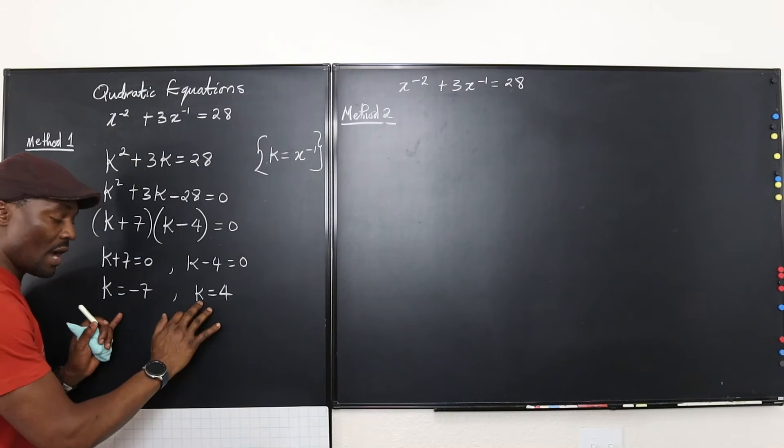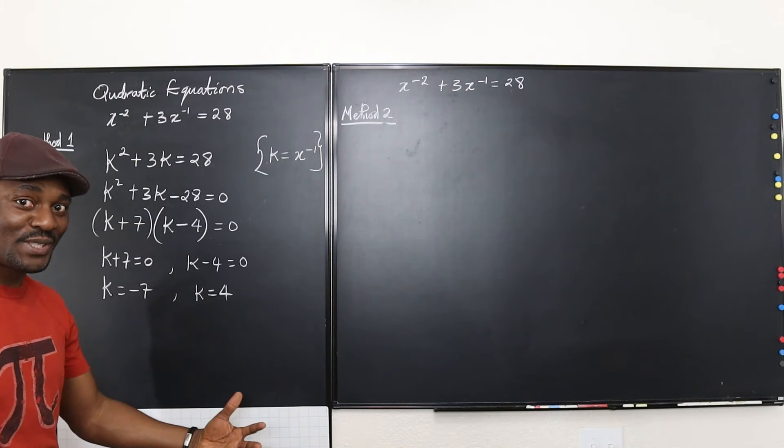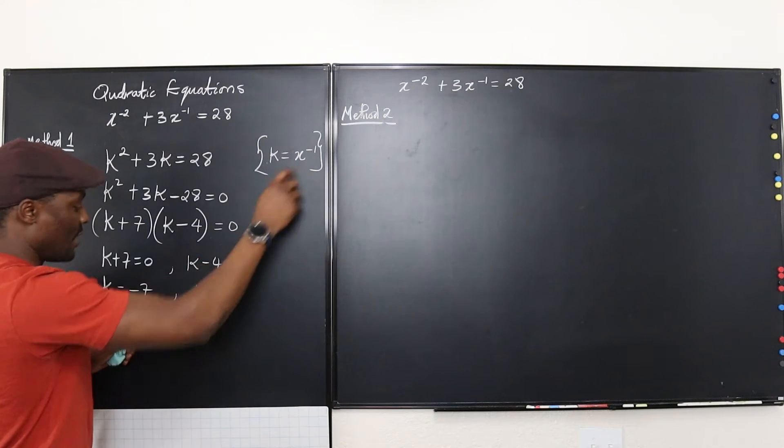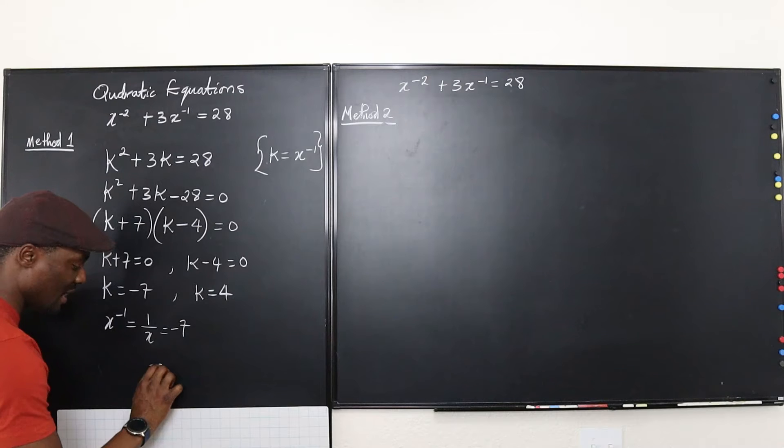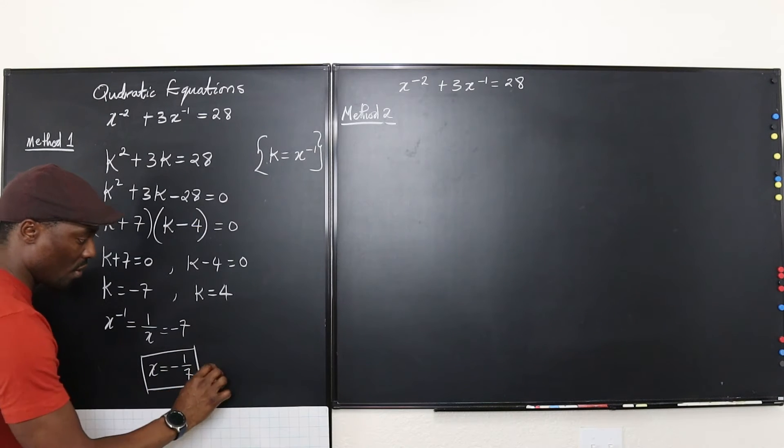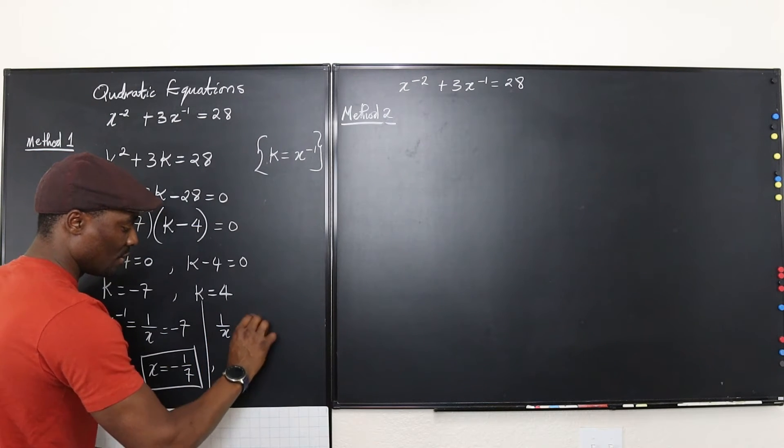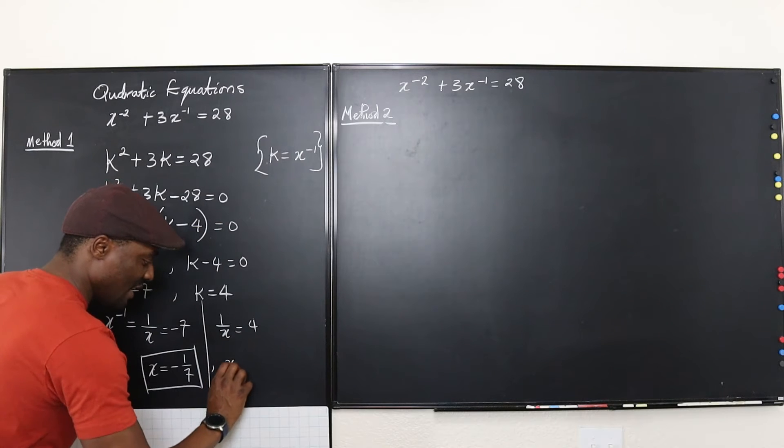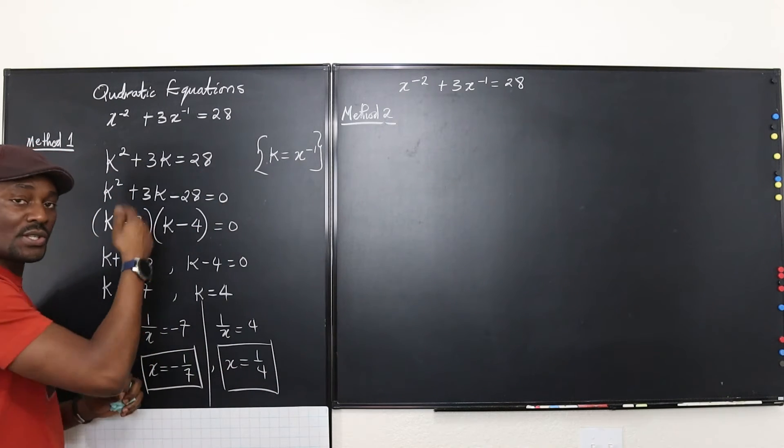So now remember, don't stop here because we need to go back and get x. The purpose of this equation was to find x, not to find k. We introduced k. So don't ever stop here. So we have to go back and say k is negative 7 and k is 1 over x. x^(-1) is the same thing as 1 over x and it's equal to negative 7, which tells me that x is equal to -1/7. That's 1. Or we can go here and say that 1 over x is equal to 4. So if you take the reciprocal of both sides, you're going to get x is equal to 1/4. So these are the two possible values of x if you use the substitution method.